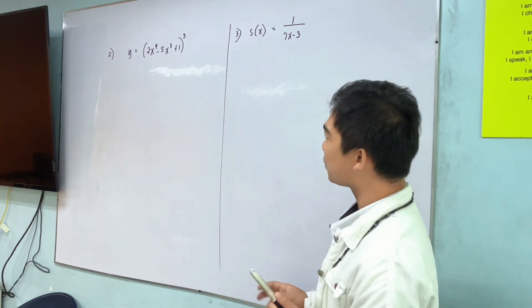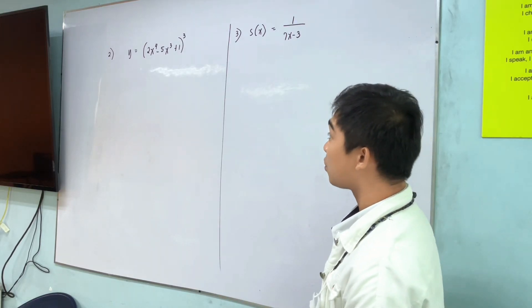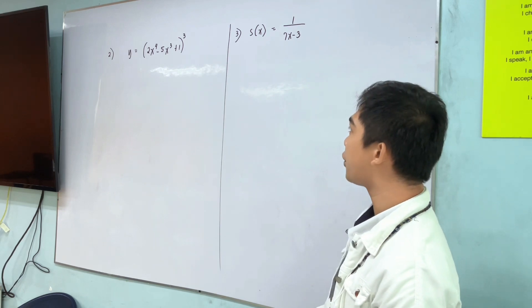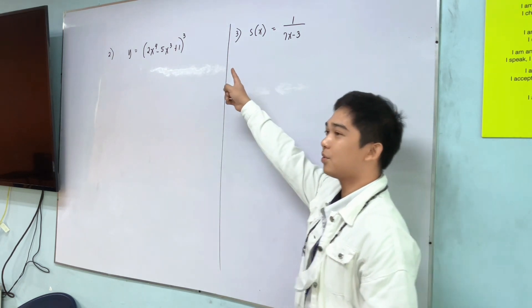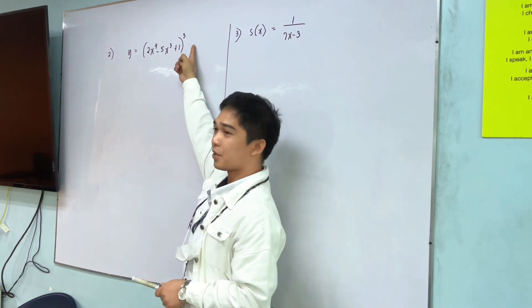Okay, let's now proceed in number 2. y is equal to quantity 2x raised to 4 minus 5x cubed plus 1 raised to cube, the third power or cube.